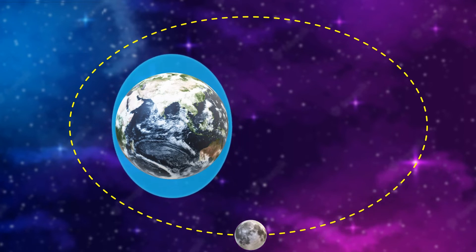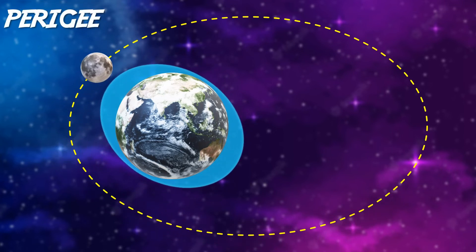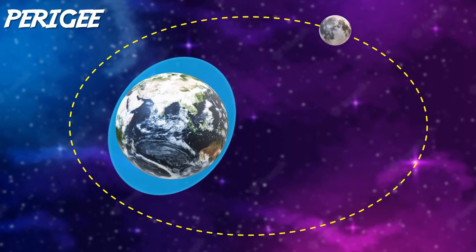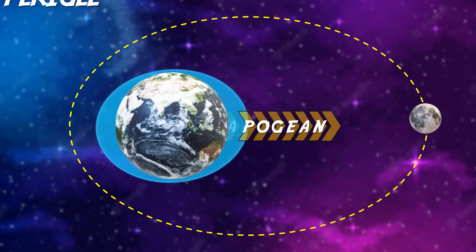When tidal forces are the strongest and closest, it's called a perigee tide. But when tidal forces are the weakest and furthest away, it's called an apogean tide.